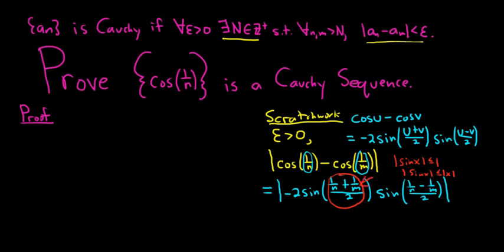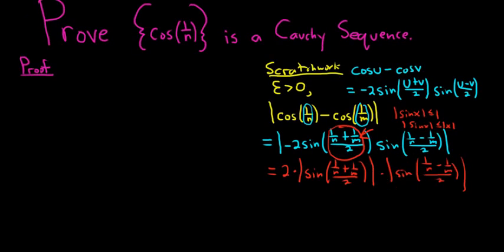So this will be 2 times sine of 1 over n plus 1 over m over 2 times absolute value sine of 1 over n minus 1 over m all over 2. So the first one we're going to keep, this will be less than or equal to 2 times the absolute value of 1 over n plus 1 over m. And then this one we can drop and make less than or equal to 1. The 2's cancel, so we get absolute value of 1 over n plus 1 over m.